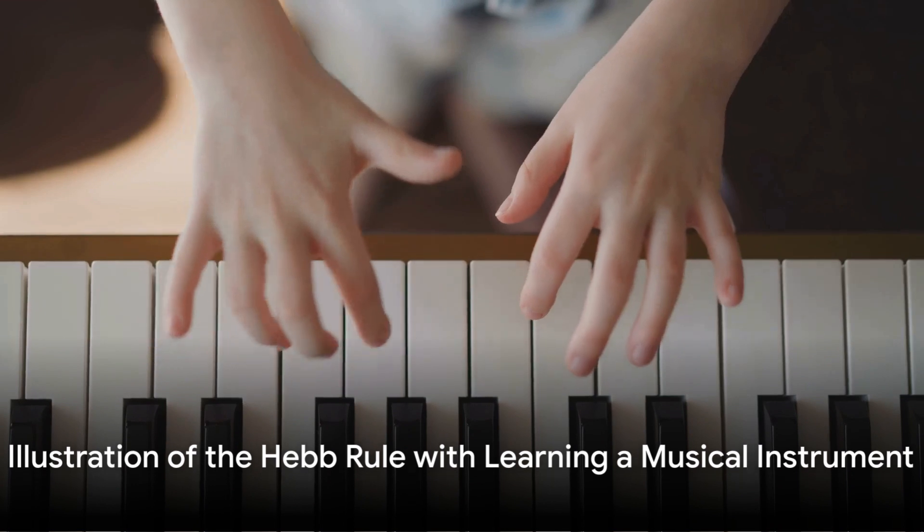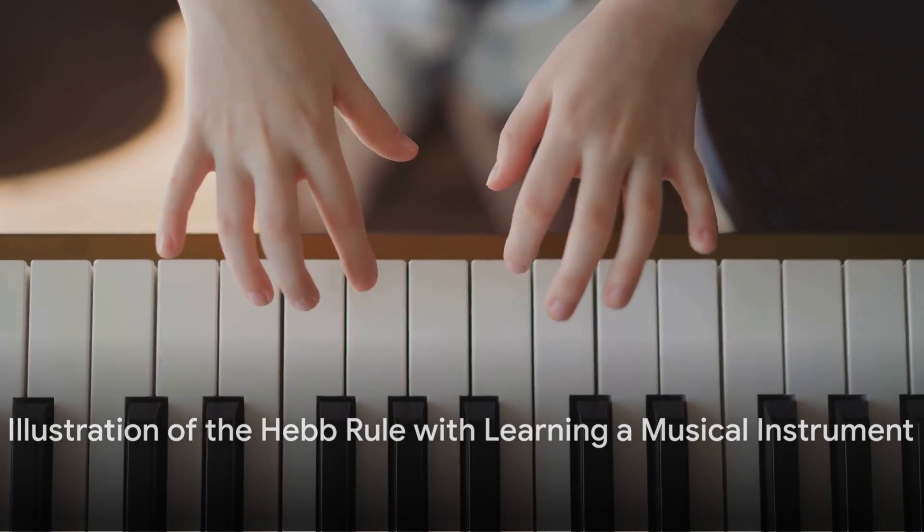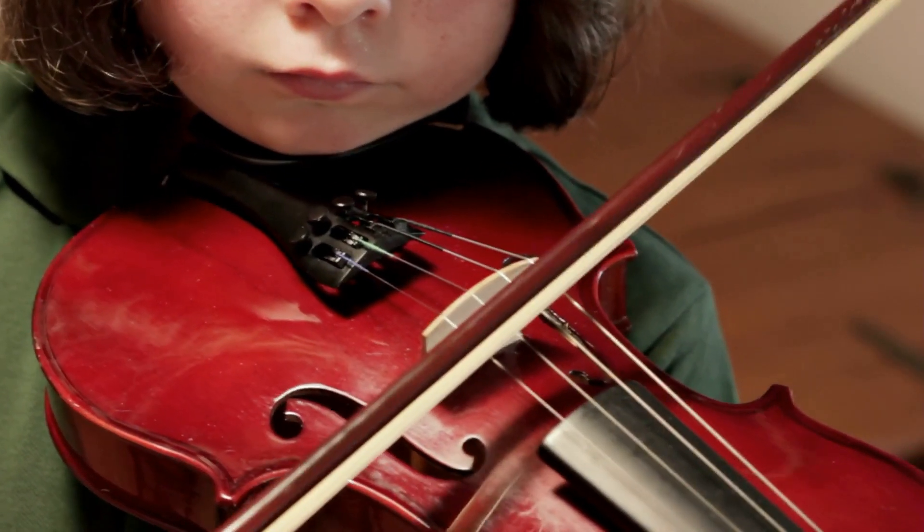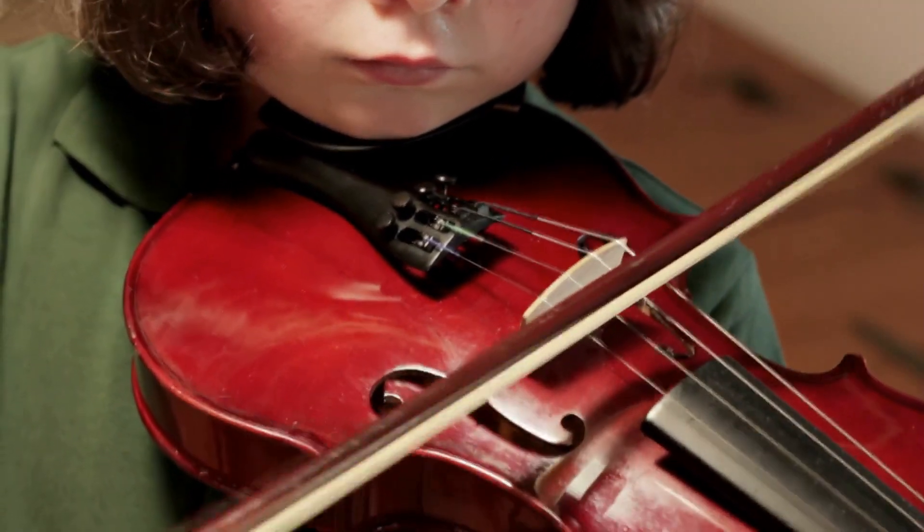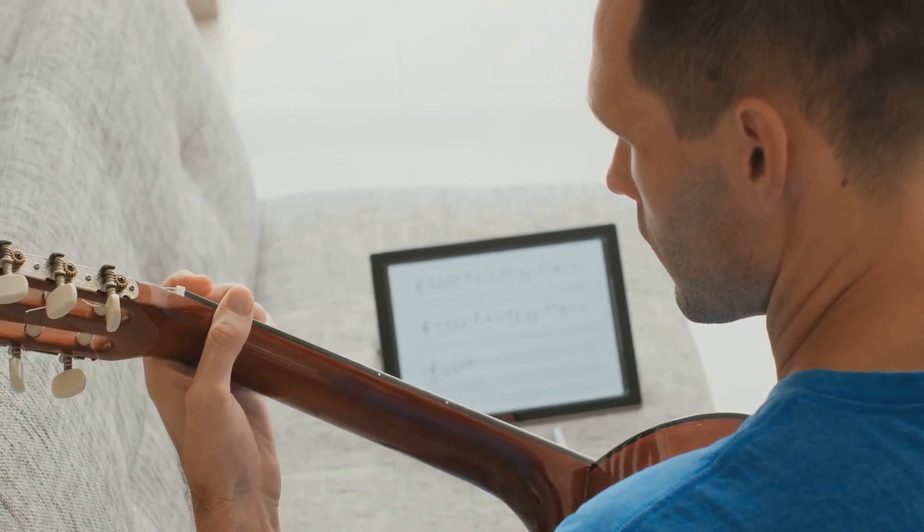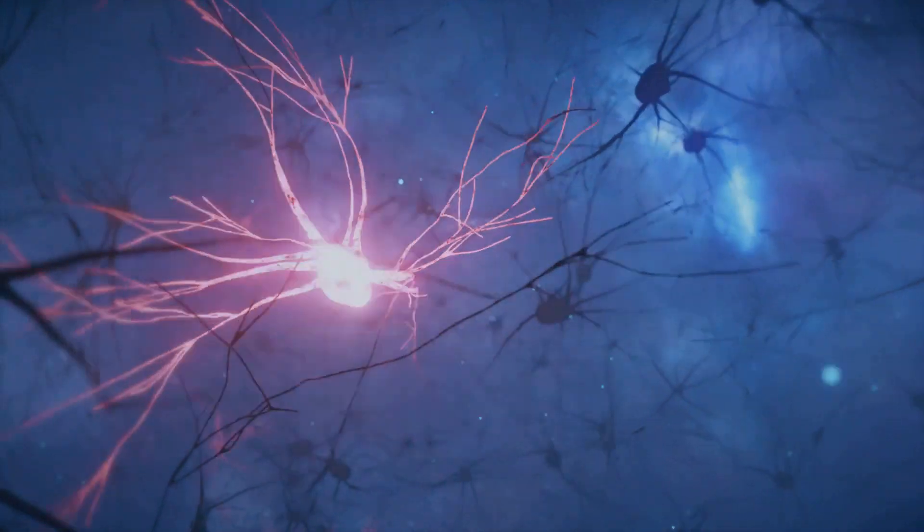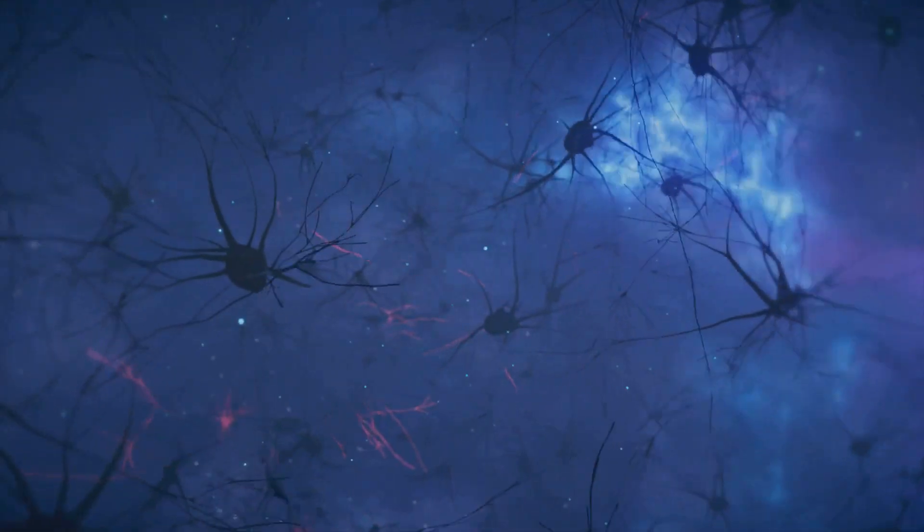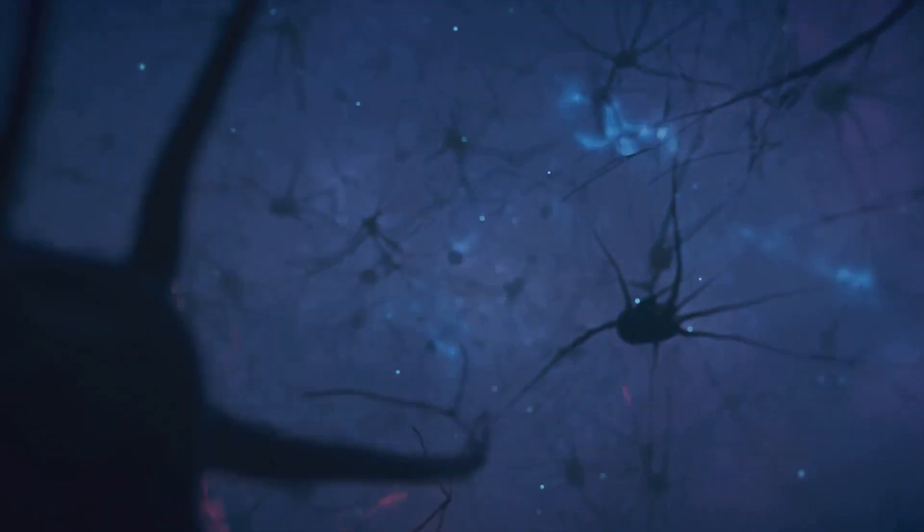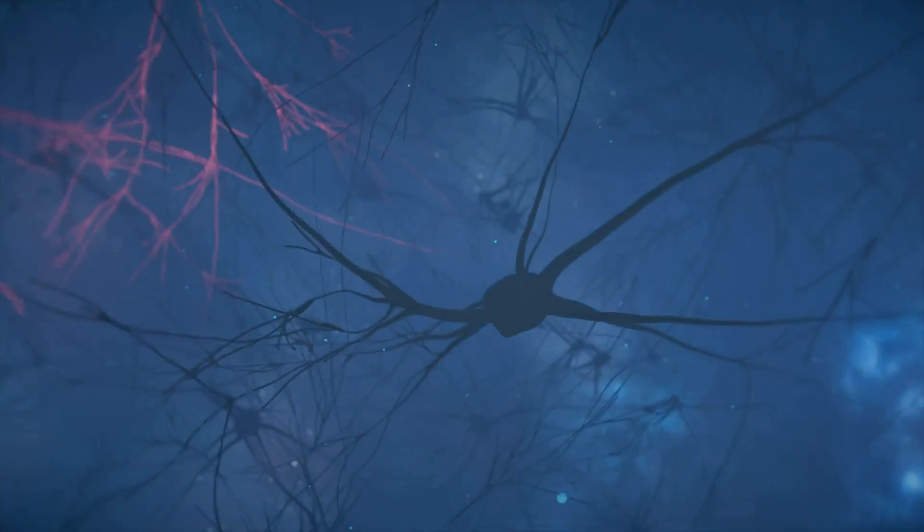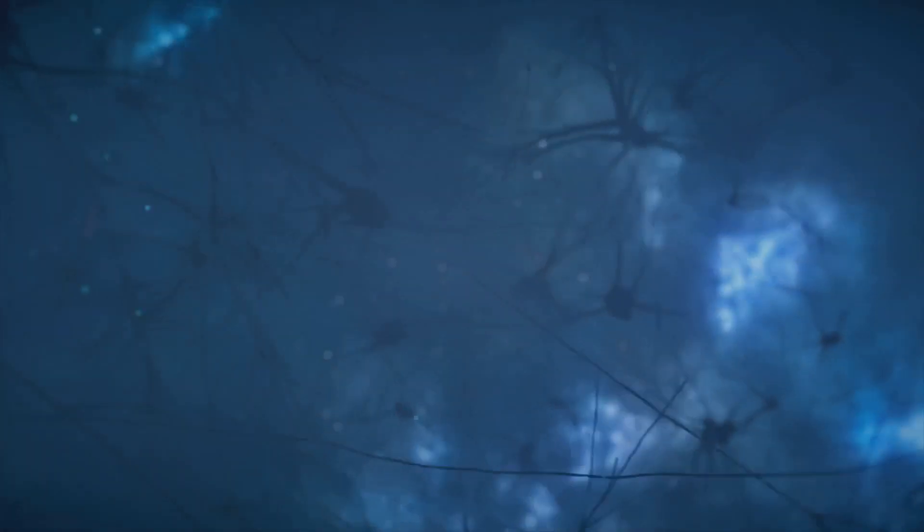Imagine this scenario: you're learning to play a musical instrument. At first, it's challenging. You fumble with the notes, unsure of the rhythm. But as you continue to practice, it becomes easier. The sequences of notes become second nature. According to the Hebb rule, this is because the neurons responsible for these actions are strengthening their connections through repeated interaction.